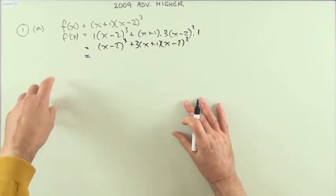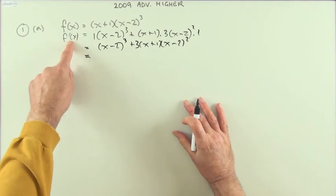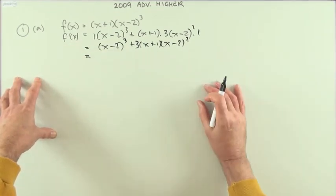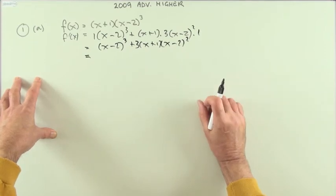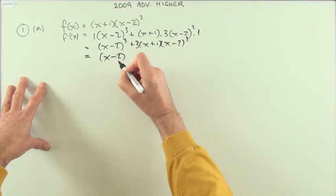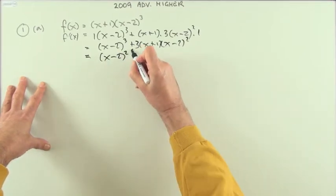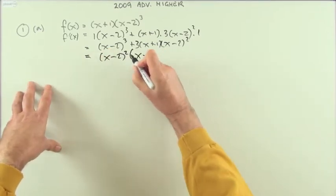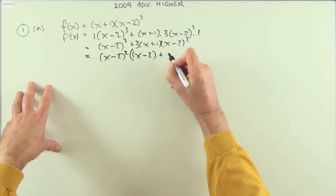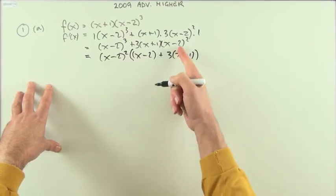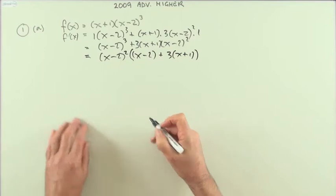Now, since I need to find the values of x for which the derivative is equal to zero, I'm looking for a factorization, so immediately I'll look for any common factors, and there are x minus 2 twice. So you could take out the factor x minus 2 squared, leaving you with one factor here, of x minus 2, I could leave it in a bracket, plus 3 times x plus 1.